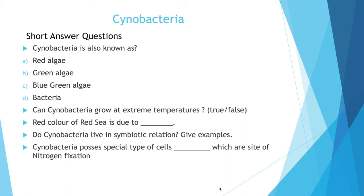Third question. The red color of red sea is due to which bacteria or which algae? The answer is the red color of red sea is due to the cyanobacteria known as Trichodesmium erythreum.